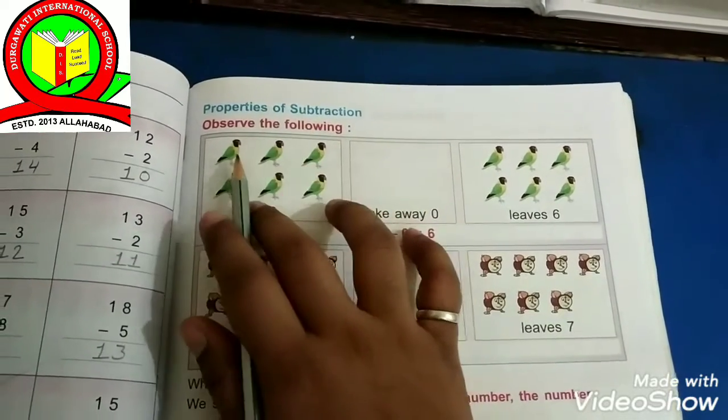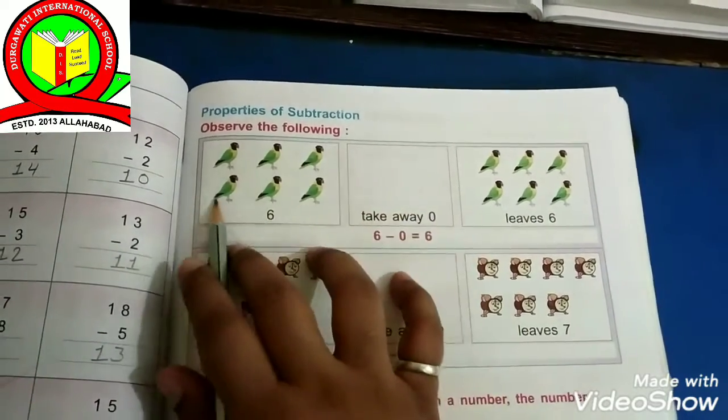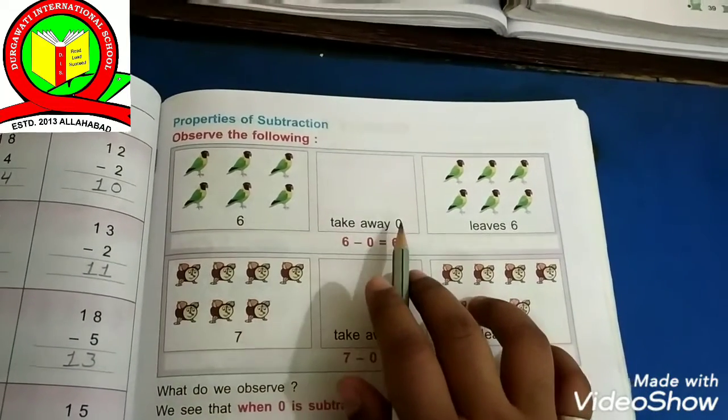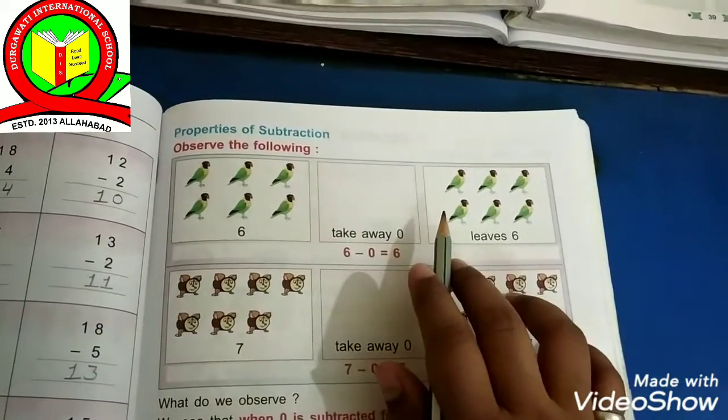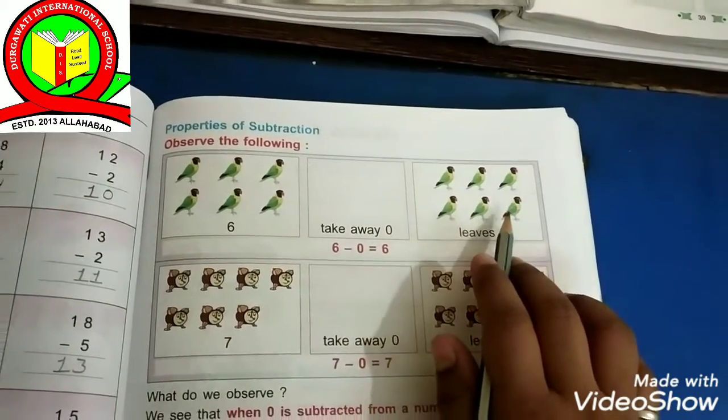So observe the following. How many butterflies are here? 1, 2, 3, 4, 5, 6. Let's take away 0. Now how many butterflies are left? 1, 2, 3, 4, 5 and 6.